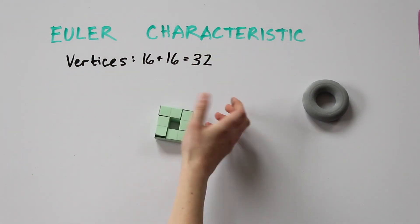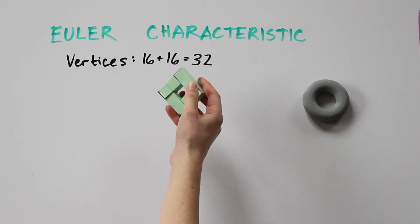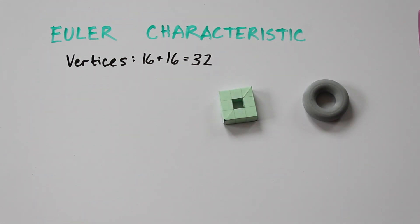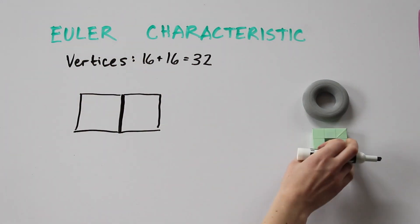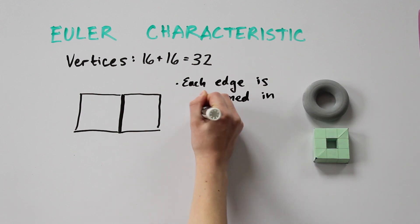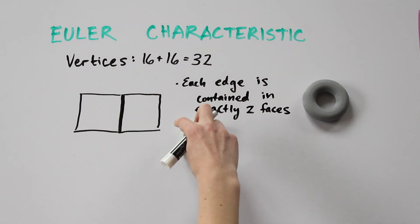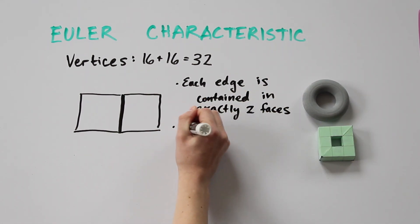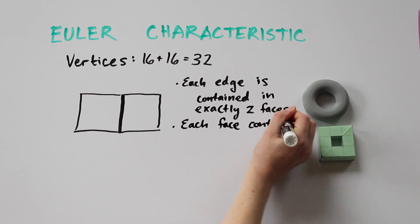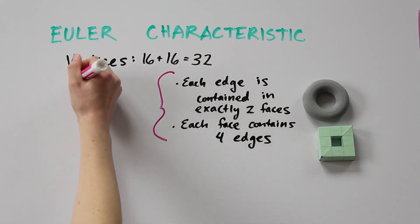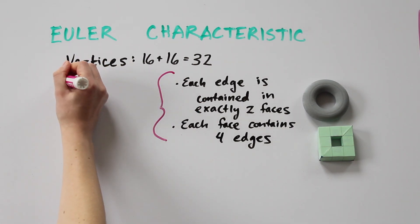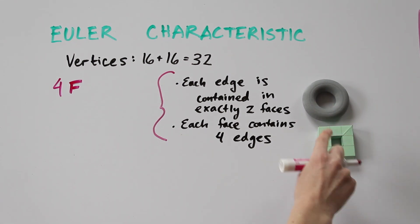Notice that there are a lot of edges to count, so let's make it a bit easier. First, observe that each edge is part of exactly two faces. Then, because this subdivision is made up of squares, each face contains exactly four edges. So if we count the number of faces and then multiply that by four, we've counted each edge exactly twice.